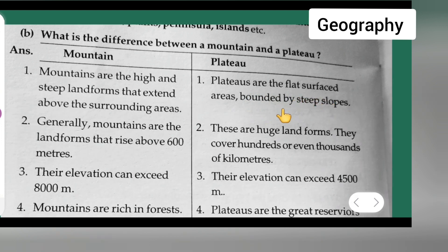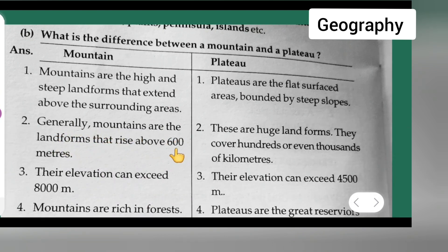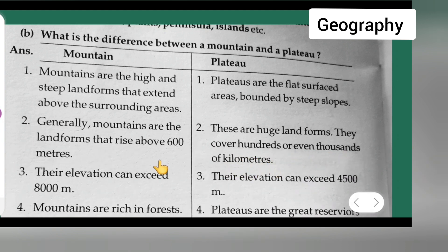Second point under mountain: generally, mountains are the landforms that rise above 600 meters. Second point under plateau: these are huge landforms — they cover hundreds or even thousands of kilometers.